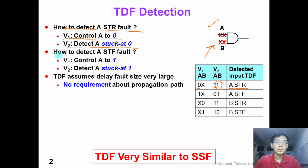Similarly, to detect A slow-to-fall fault, in vector 1, we first control input A to 1. In the second vector, we generate a test to detect A stuck-at-1 fault. As shown in this table, in vector 1 A is 1, in vector 2 A is 0, and input B must be 1 so that A stuck-at-1 fault can be detected.